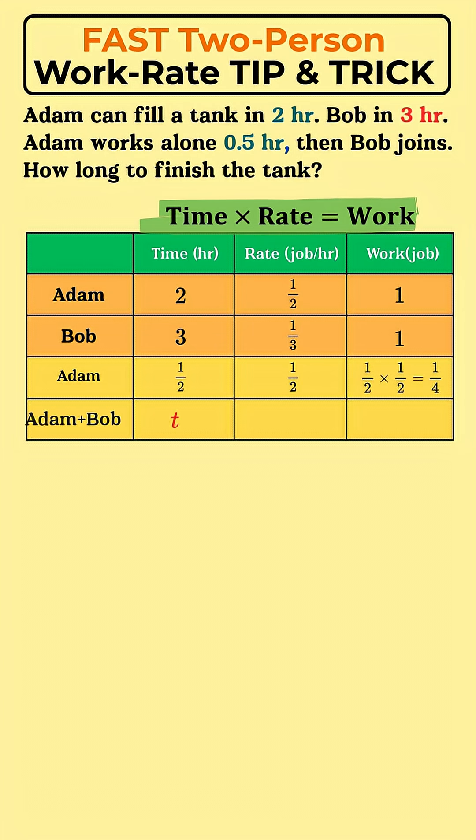Step 3: Find the work remaining. The total job is 1. 1 minus the 1 fourth Adam did leaves 3 fourths of the tank to fill.